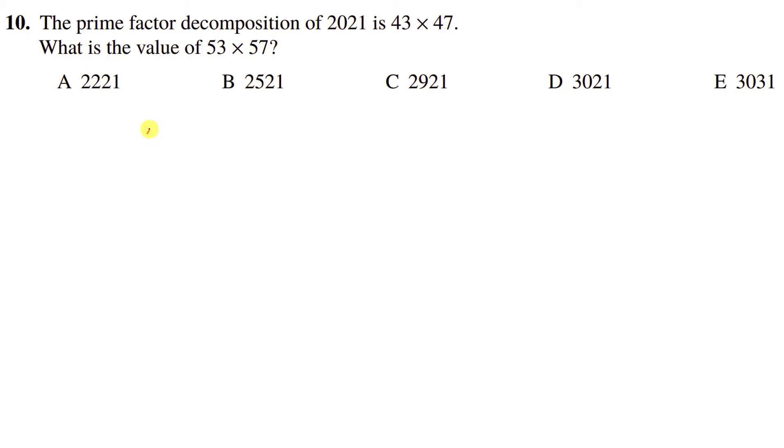We can rewrite 53 as 43 plus 10. We can rewrite 57 as 47 plus 10. And now we have some nice double brackets we can expand. So that's going to be 43 times 47 plus 10 times 47 plus 10 times 43 plus 10 times 10. We've just expanded these double brackets.